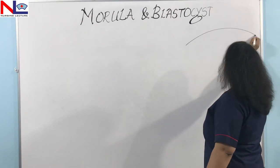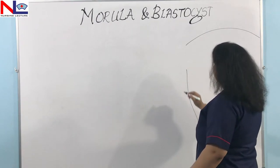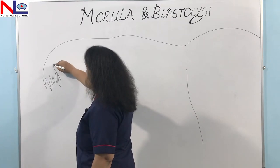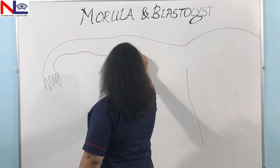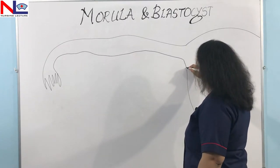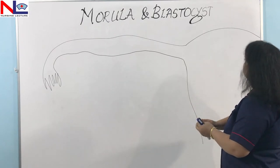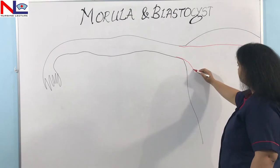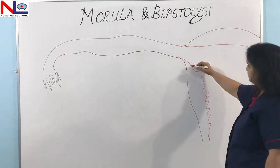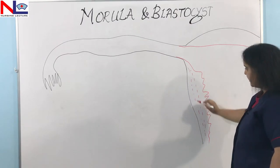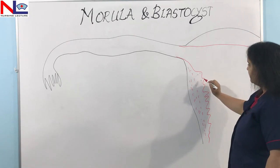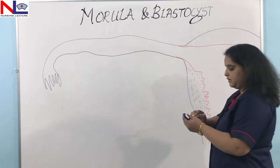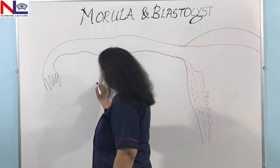Here is the uterus, and there is the uterine tube and this is the finger-like ending of this uterine tube. There is the wall of the uterus. Here is the myometrium and this one is the endometrium, that is the innermost lining of the uterus. And there is the female gonad, that is the ovary.